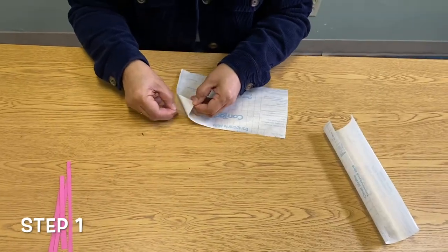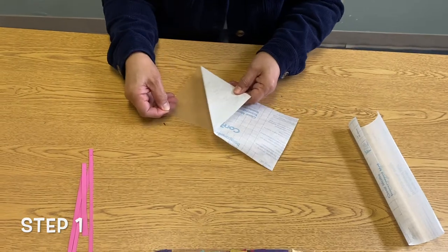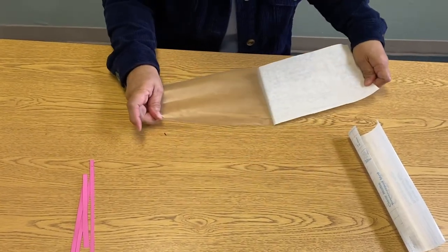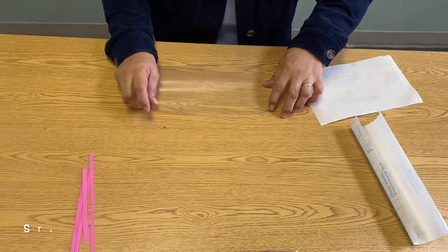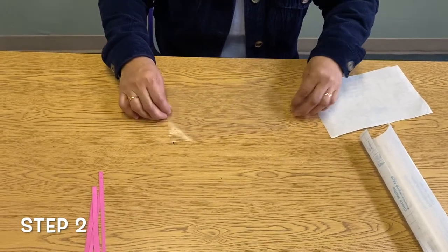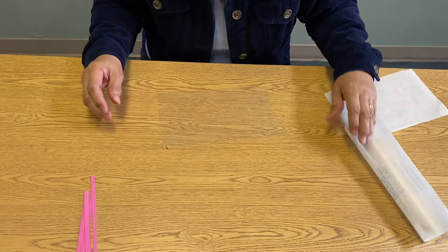Step 1. Take the backing off one of the pieces of contact paper. Step 2. Lay the contact paper on the table with the sticky side up.